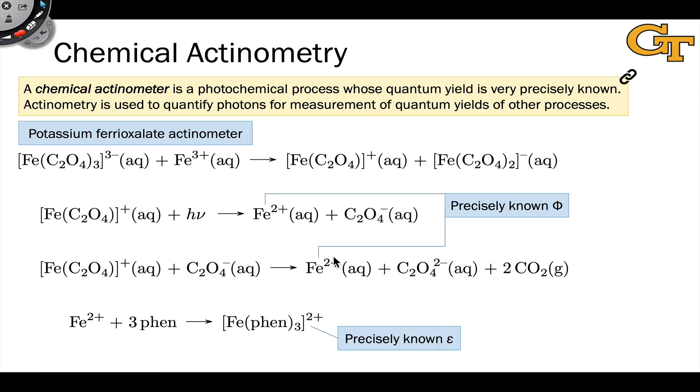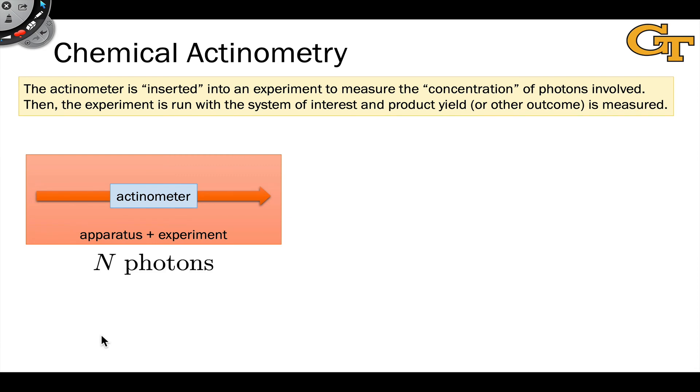Going back to the previous slide, we can measure precisely the yield of iron 2+ and work backwards to calculate that N photons have impinged on the actinometer in this apparatus. We then take out the actinometer and put in our system of interest, our photochemical reaction or substance engaging in a process whose quantum yield we want to know.